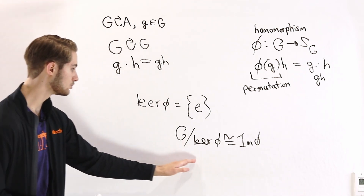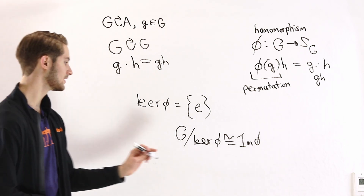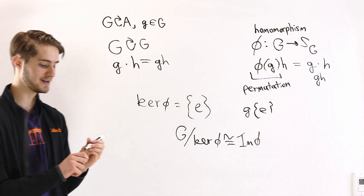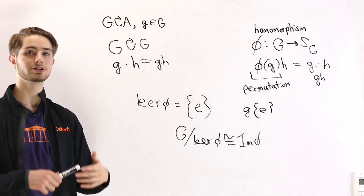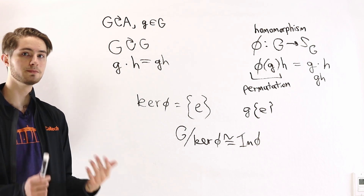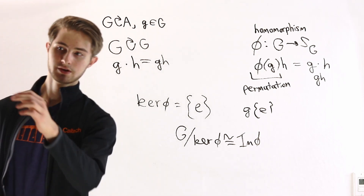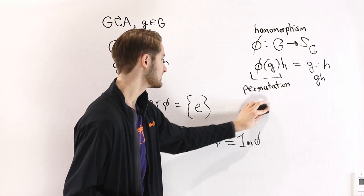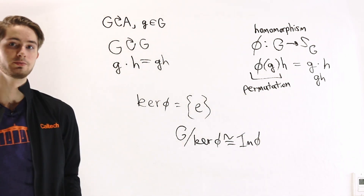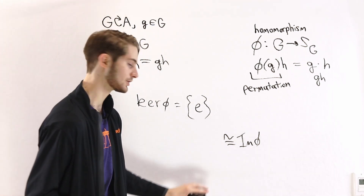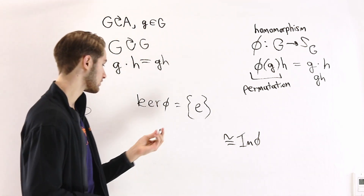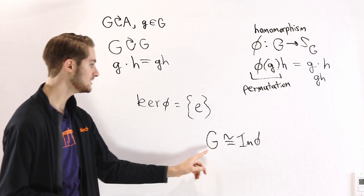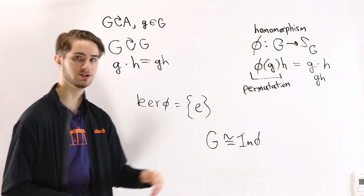If we look at this quotient group, all of the cosets look like g times the set {E}, which is just individual elements of the group, and they multiply in the same way. So G mod {E} is just isomorphic to the original group G. Instead of looking at G mod the kernel of φ with a trivial kernel, we can just look at the group itself. So we get that G is isomorphic to the image of φ.